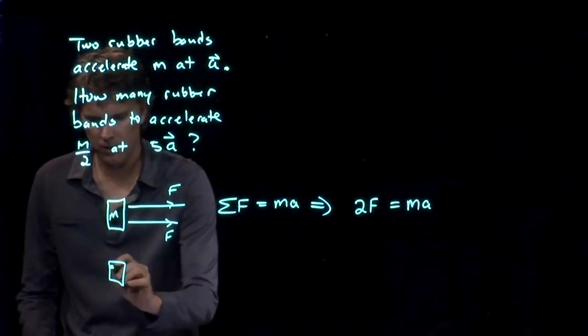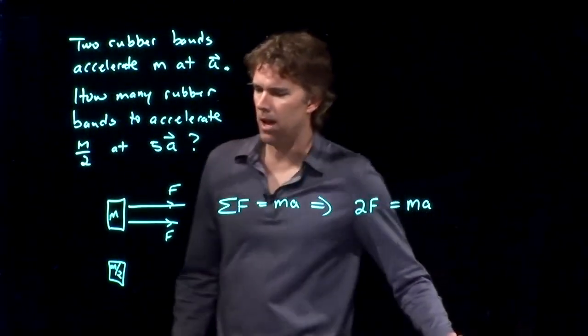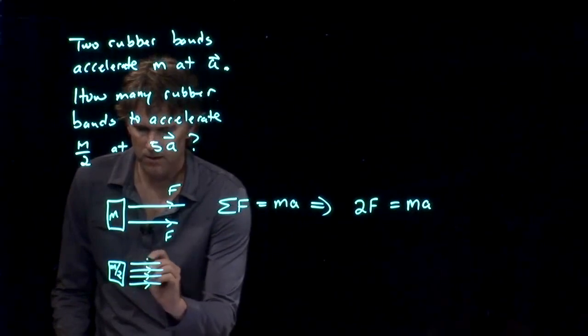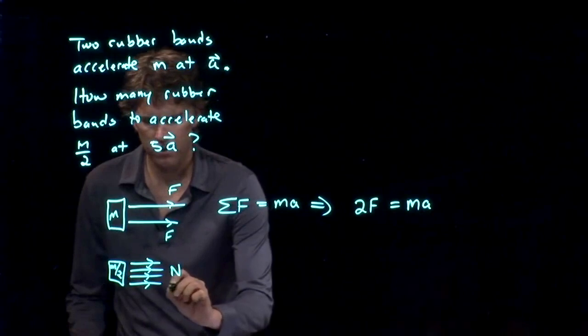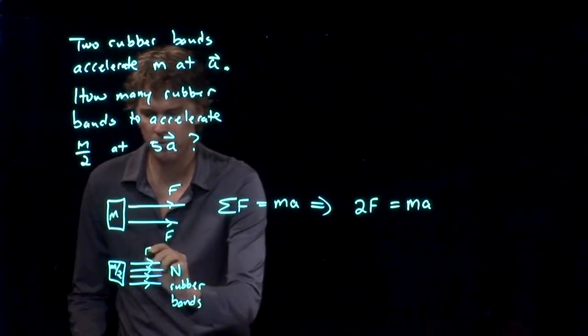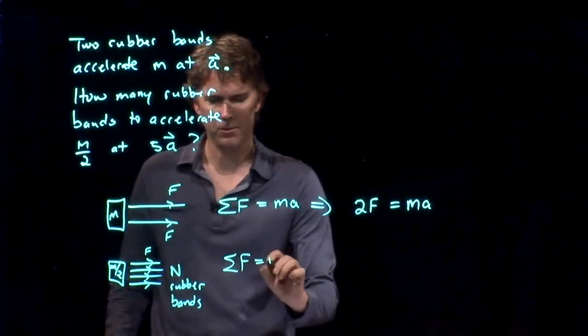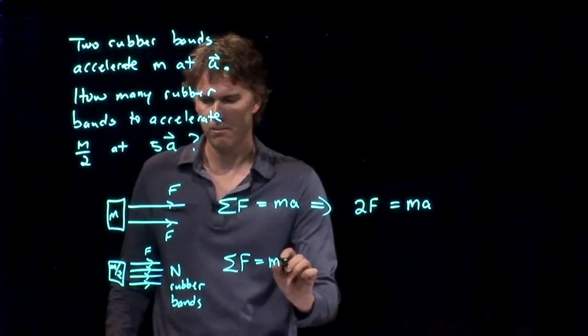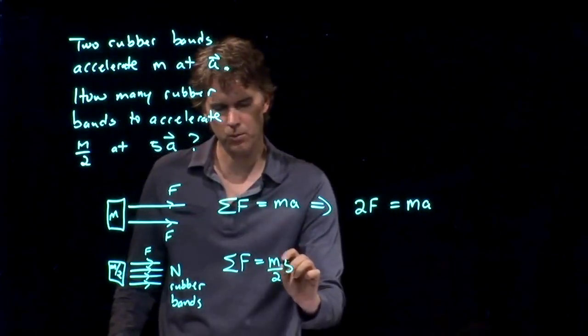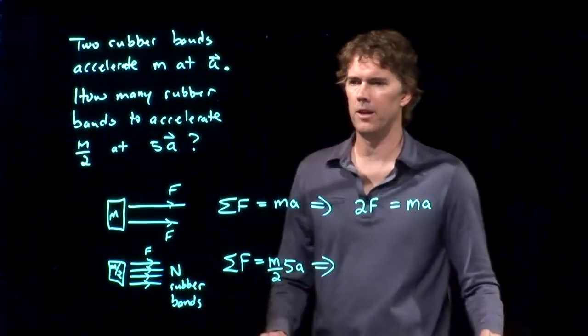What about the other picture? Well, the other picture looks like this. It's half the mass, M over two. And we're going to have a bunch of rubber bands tied to this thing. We don't know how many. But let's say there are N rubber bands. And each one is applying a force F. Sum of the forces is equal to the mass times the acceleration. But we know that the mass got cut in half and the acceleration went to 5A.